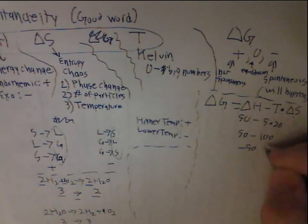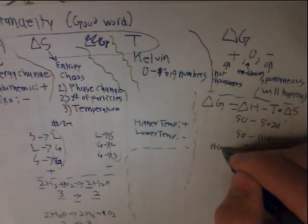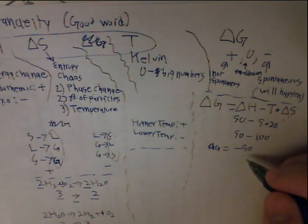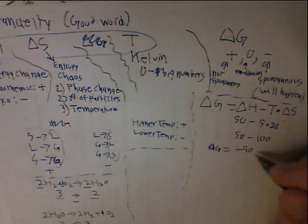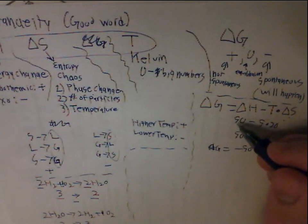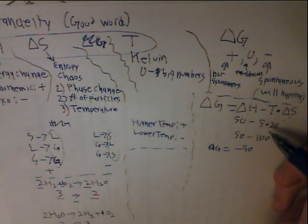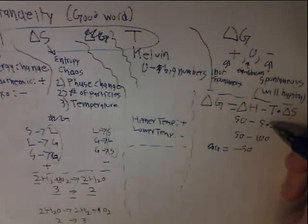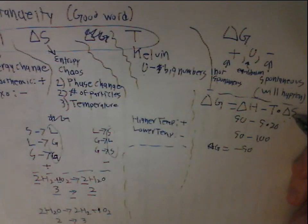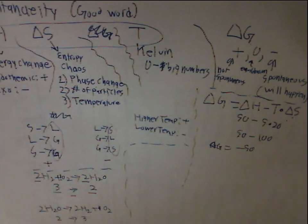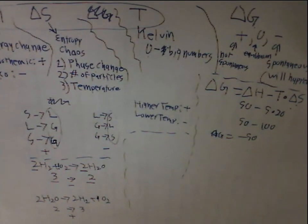The result is negative 50, so delta G is negative 50, which means the reaction is spontaneous. In this example, delta H is positive 50 kilojoules (endothermic), temperature is 5 degrees, and delta S (chaos) is 20. The exact units for delta S may vary depending on your teacher.